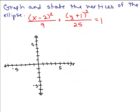So here's a problem. Graph and state the vertices of the ellipse. Now, if this was just x²/9, the vertices are easy. It's just the x and y intercepts: 3 and -3, and 5 and -5. But everything's going to be off center here. So the first thing for us to determine is what is the center of this ellipse?